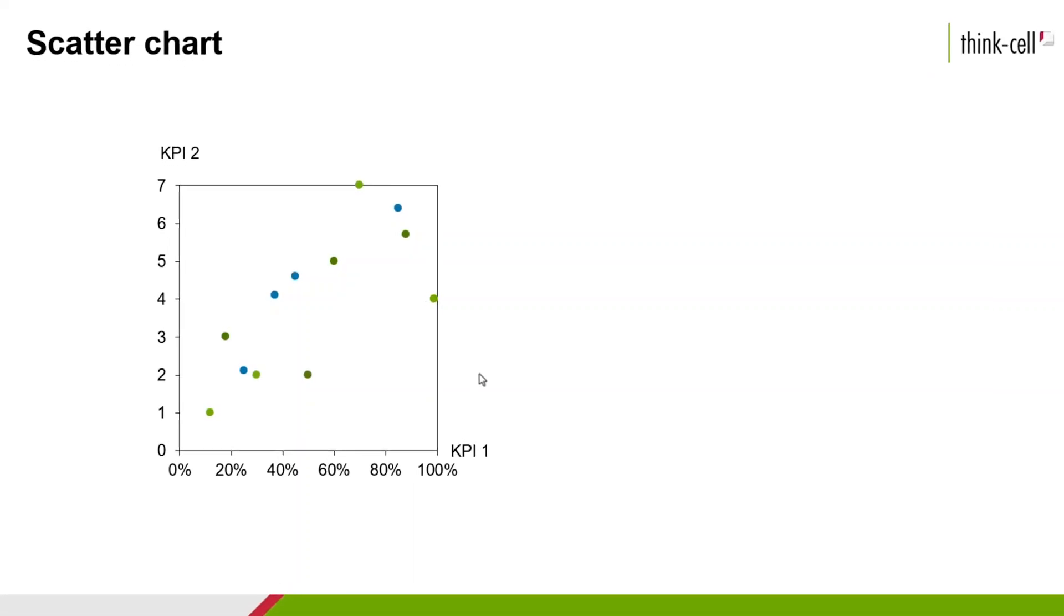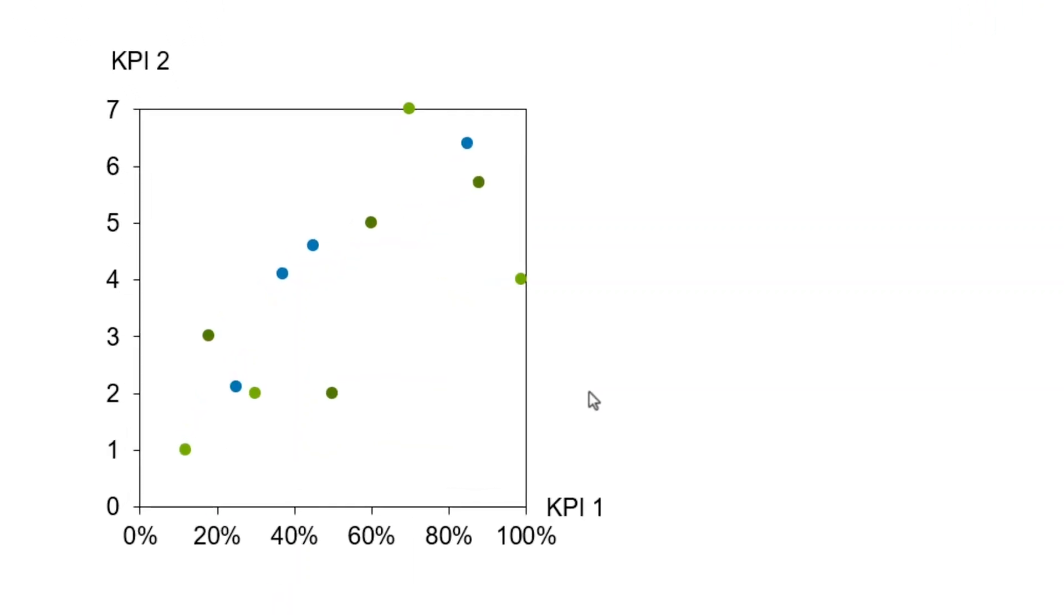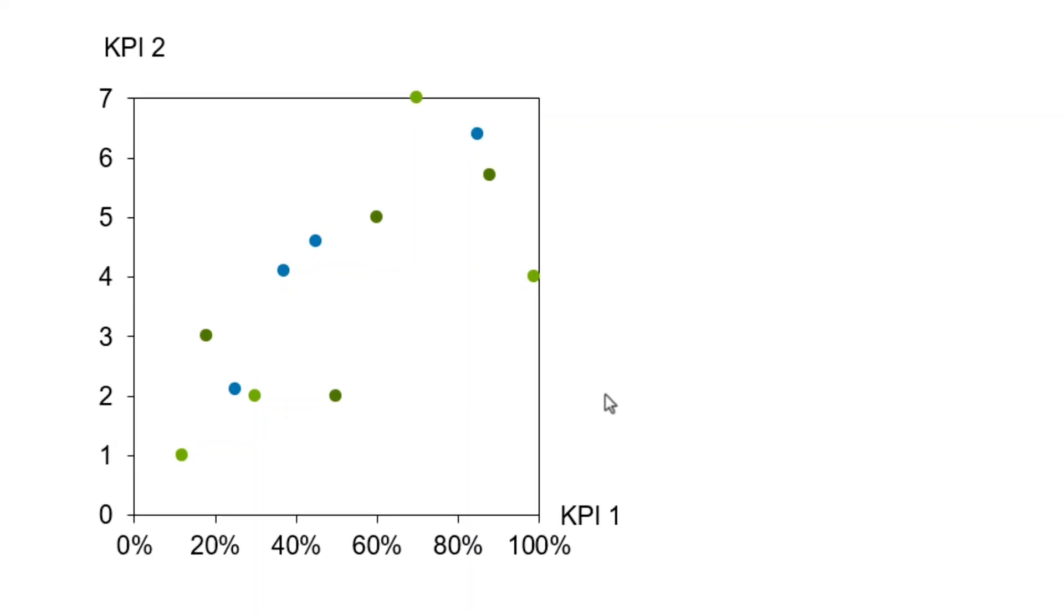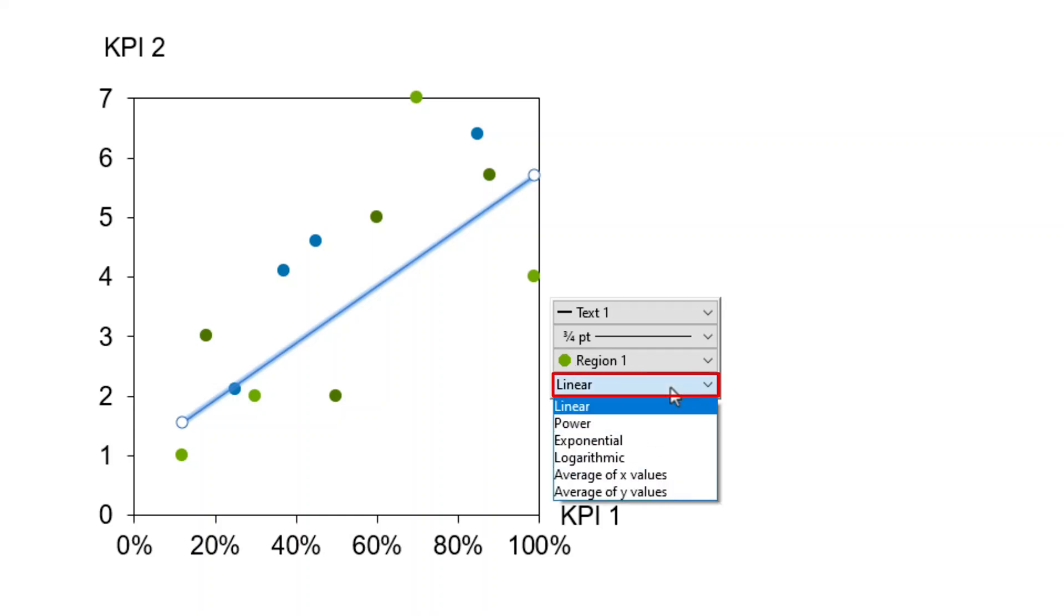Let's assume you would like to add a trendline to your scatter chart to graphically represent trends within a group of data points, for example, as part of a regression analysis. ThinkCell calculates the trendline for you. Right-click on a marker of the desired group and select Add Trendline from the context menu. Open the trendline type control in the floating toolbar and choose your desired option. The linear type is the default and always available.